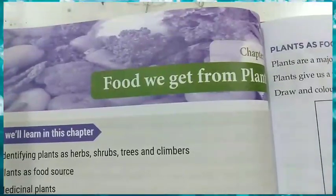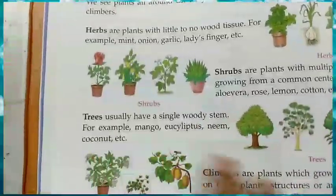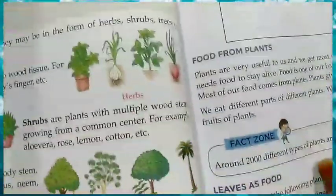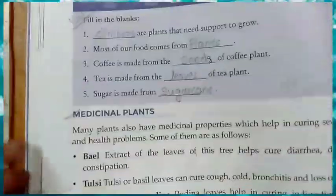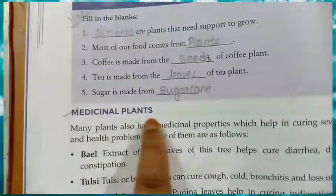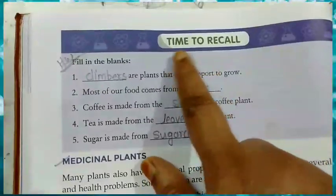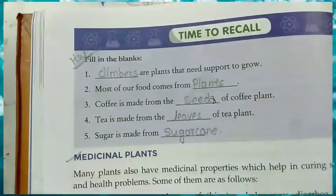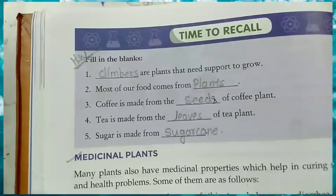We have completed a lot of portions of this chapter — herbs, shrubs, trees, climbers, and leaves as food. We have also completed medicinal plants. Children, I had given you homework to write the 'Time to Recall' section.